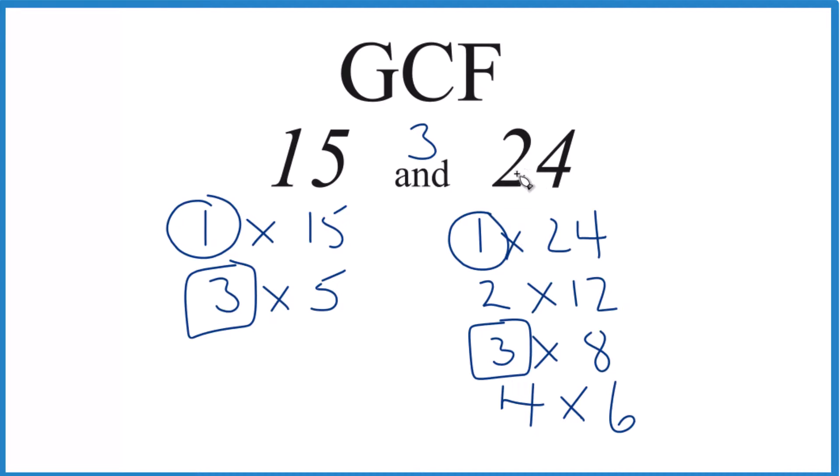There are other ways to do this. You could use prime factorization. That works better on really big numbers. For the smaller numbers like this, it's pretty easy. This is Dr. B with the GCF, greatest common factor for 15 and 24. The answer is 3. Thanks for watchin'.